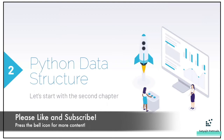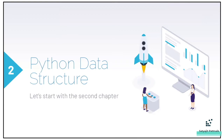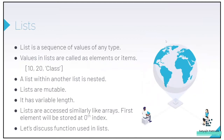Today we shall be jumping onto the second chapter, which is Python data structures. Before understanding lists, let me talk about what exactly data structures are. Data structures are nothing but structures which can hold data together — a particular way of organizing data in a computer so that it can be used effectively. We will be covering all four built-in data structures in Python: lists, sets, tuples, and dictionaries.